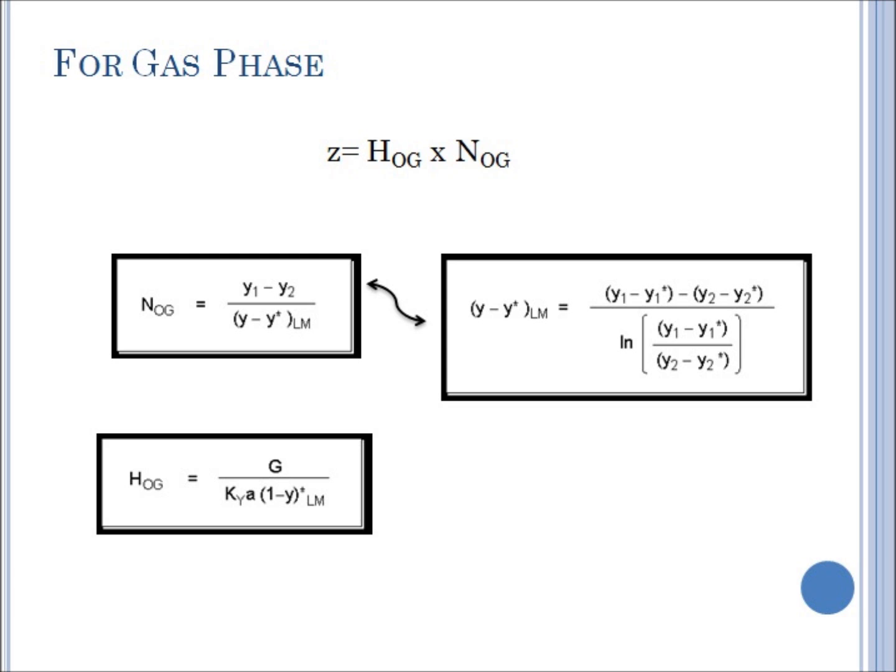Y1 is equal to the mole fraction of the solute in vapor that is in equilibrium with the liquid of mole fraction X1, while Y2 is equal to the mole fraction of the solute in vapor that is in equilibrium with the liquid of mole fraction X2. KY is the overall gas phase mass transfer coefficient. Its unit is mole over area times time times driving force. A is equal to the packing parameter. It is equal to the area over volume. Y minus Y prime is the concentration difference driving force for mass transfer in the gas phase at the bottom of the column, while Y2 minus Y2 prime is the concentration difference driving force for mass transfer in the gas phase at the top of the column.